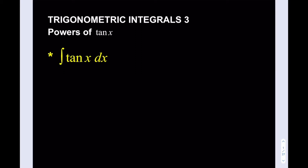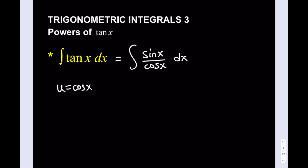There are a few ways to do this, but what I'm going to do is write this as sine x over cosine x. Then I will be using u-substitution here. So u equals cosine x. From here I get du as negative sine x dx. But I don't have negative sine x, but I can rearrange it — sine x dx is going to be negative du.